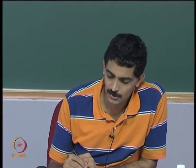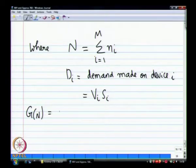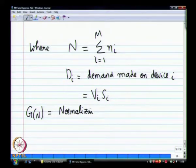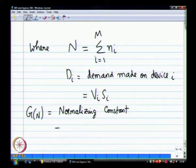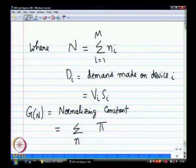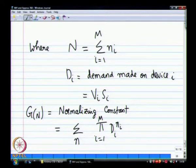I have defined g(n) as a normalizing constant. I need this to ensure that all the probabilities sum up to 1 and are less than or equal to 1. This is simply the sigma over all possible values of n — every combination of n — as a function of those states with d.